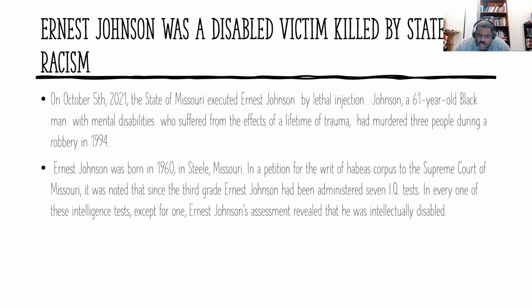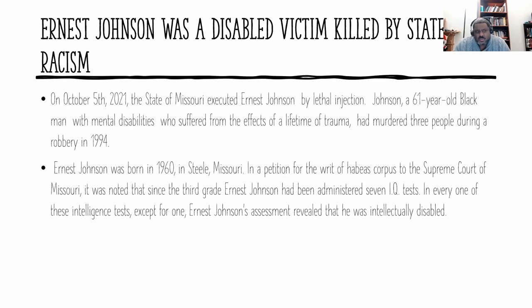Ernest Johnson was executed October 5th, 2021. He was 61 years old, had a history of mental disabilities, and suffered from the effects of a lifetime of trauma. His execution was said to be the result of his murdering three people in a robbery in 1994. I worked with abolitionists in Missouri who were trying to stay his execution, and when I say that this man was a victim of every kind of segregational and racist circumstance, words don't do justice to the oppression and marginalization he went through.